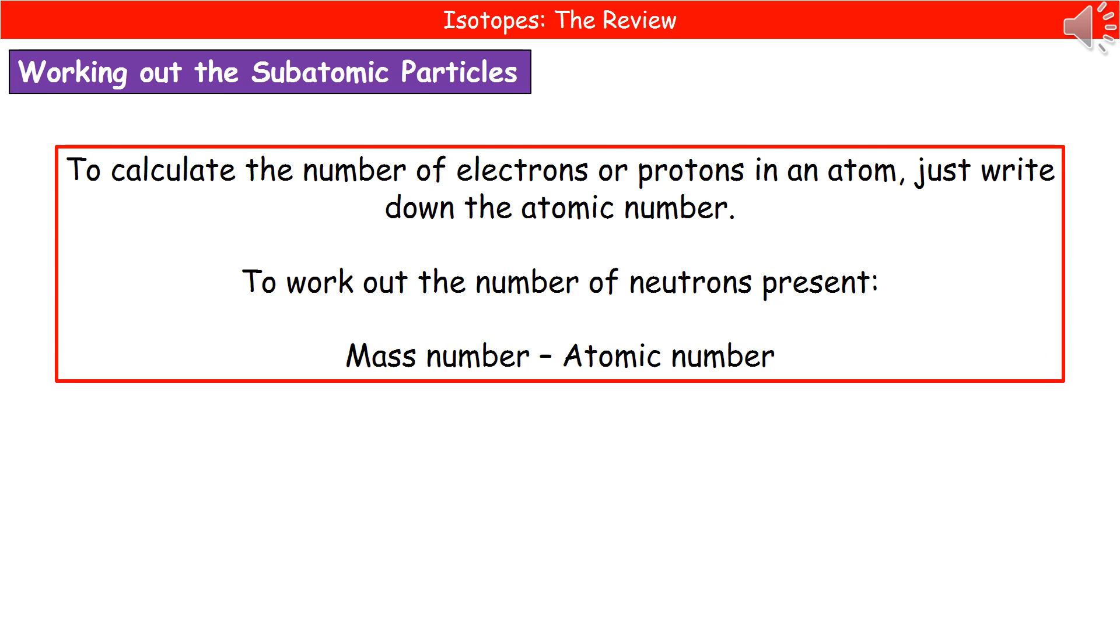So an old favourite of OCR is getting you to work out the number of neutrons present. They could also ask you how many protons and electrons are present in any particular element. So in order to do this, if we were asked to work out the number of protons or electrons that are present in any element at all, all you do is you look at your periodic table, which is in your data sheet. You find that element and then you have a look at the atomic number and write it down. That's literally it.